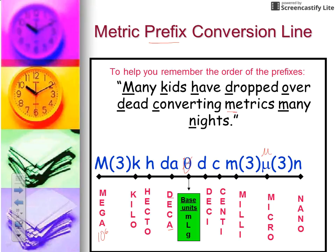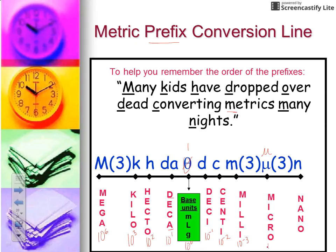Mega equals 1 times 10 to the 6th power. Kilo's value is 1 times 10 to the 3rd power. Hecto is 1 times 10 to the 2nd power. Deca is 1 times 10 to the 1st power. At the base unit position, it's 1 times 10 to the 0 power — and anything raised to the 0 power is just 1. Then deci is 10 to the negative 1, centi is 10 to the negative 2, milli is 10 to the negative 3, micro is 10 to the negative 6, and nano is 10 to the negative 9th power.